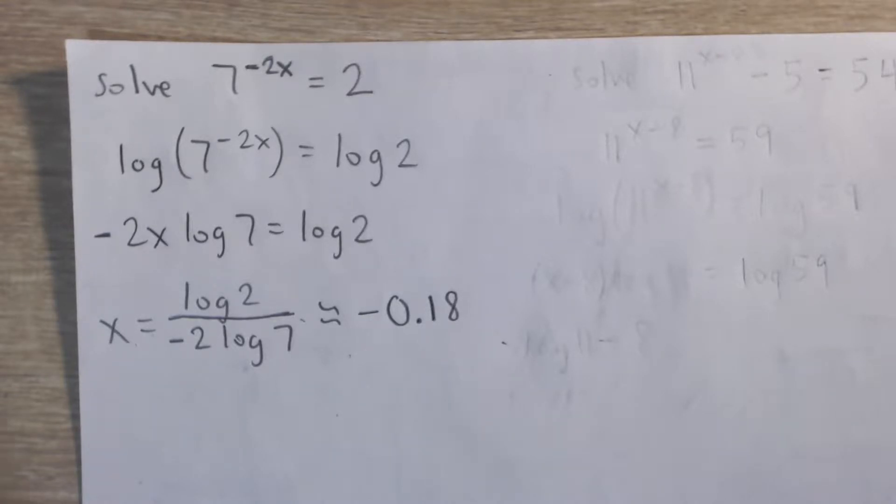First off, take a look and you can see that we can't write 7 as a power of 2. That would make our lives a little bit simpler, but because we can't do that, we have to use logarithms to solve this.